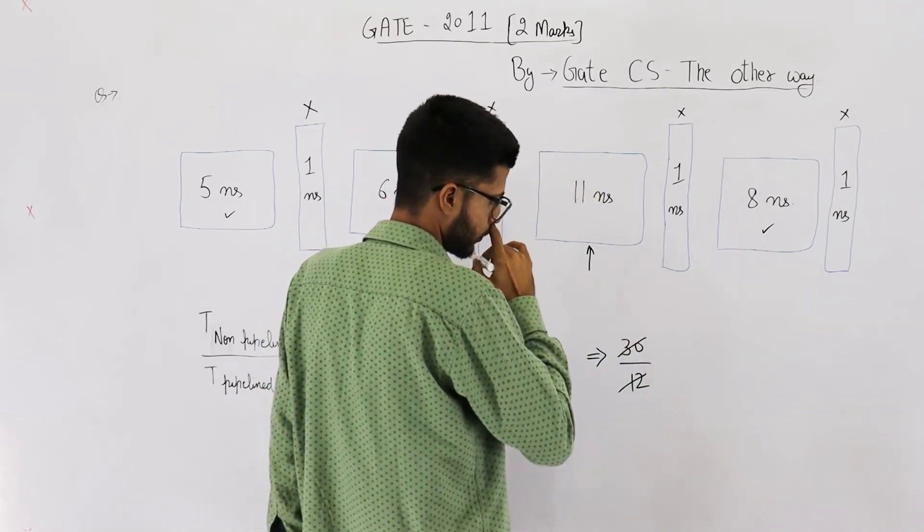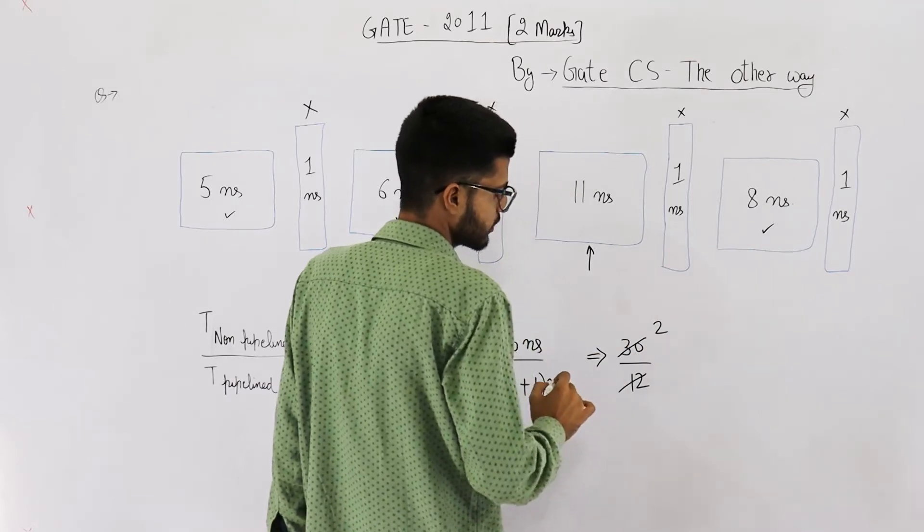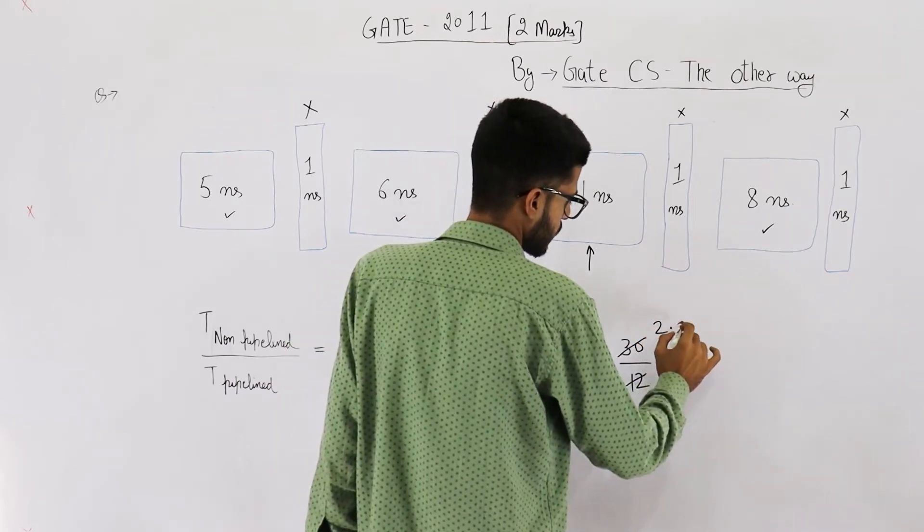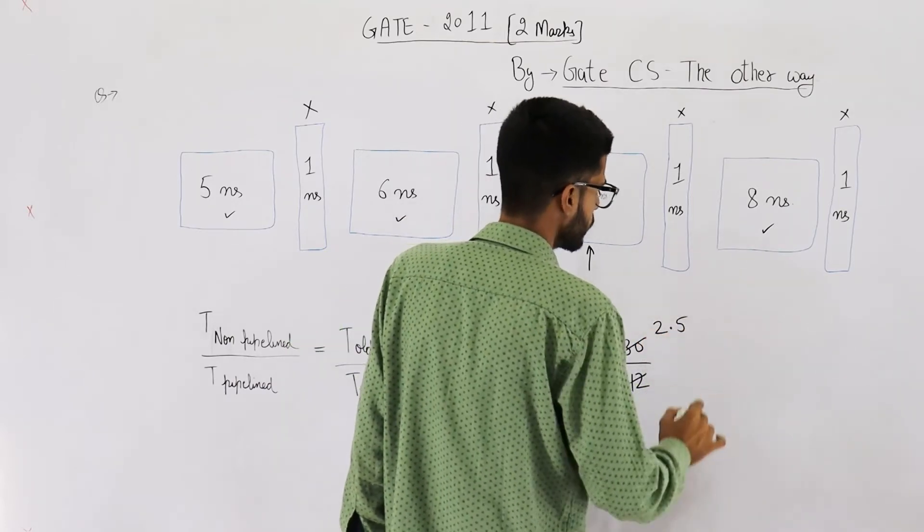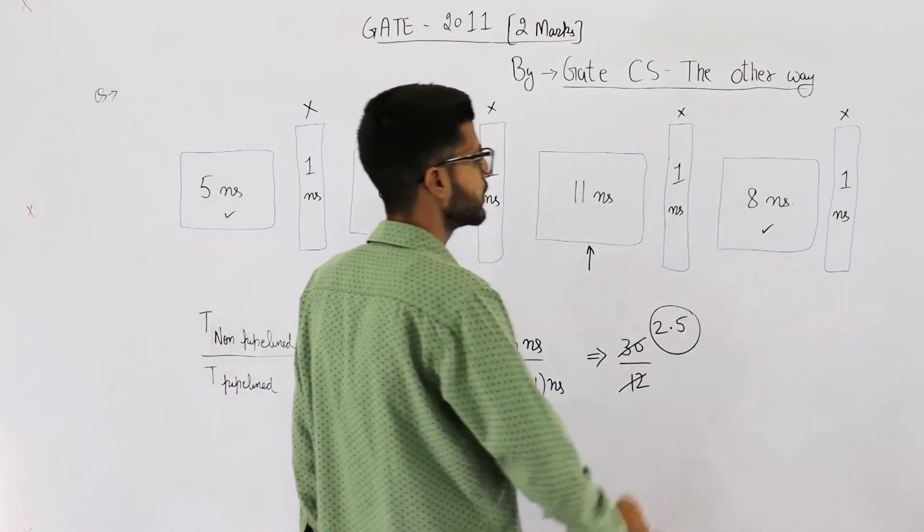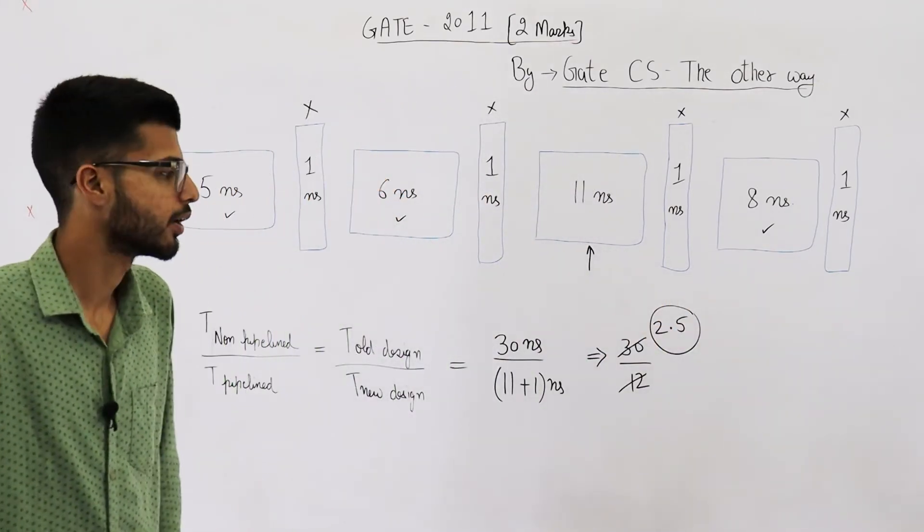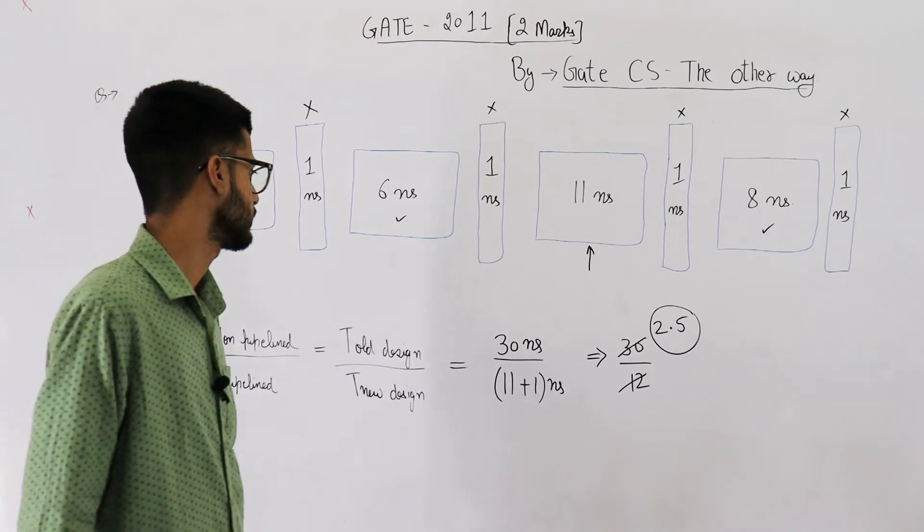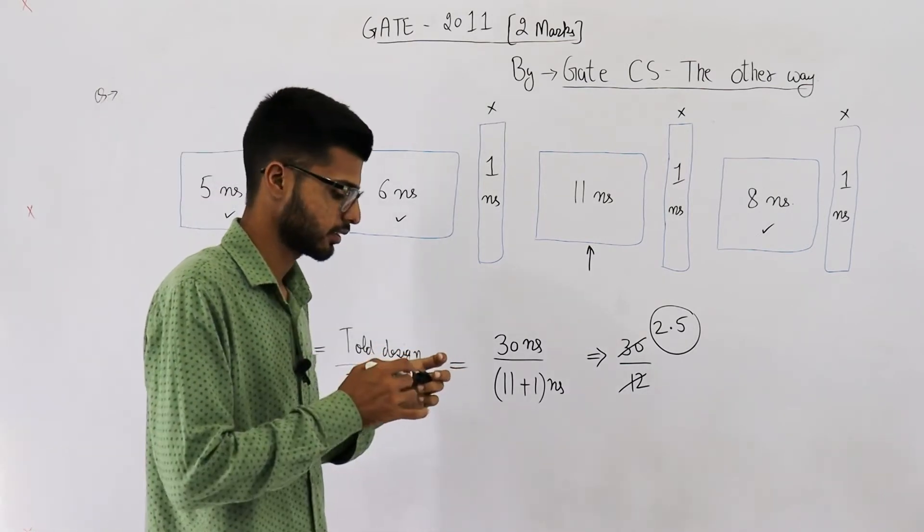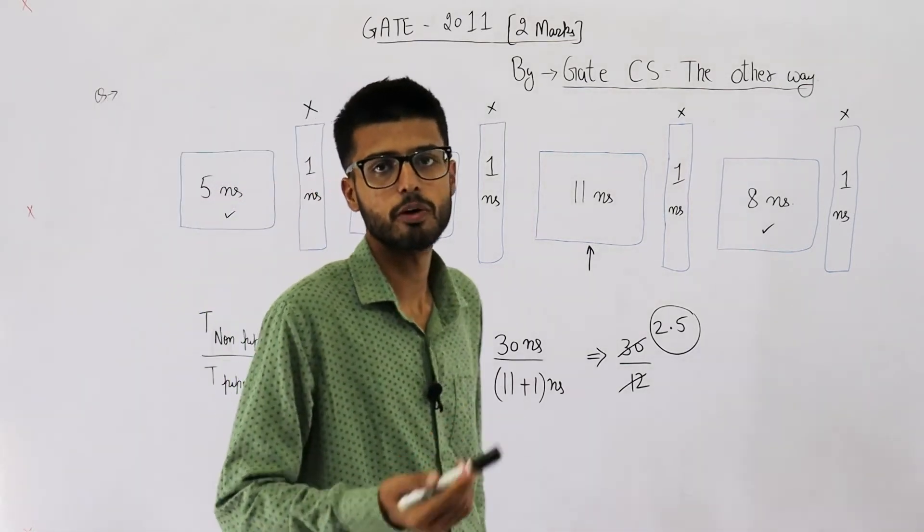And we are left with 6. That is 12 into half, 2.5. So yeah, speedup in this case is 2.5. That means pipelined version enhances the speed by 2.5 times.